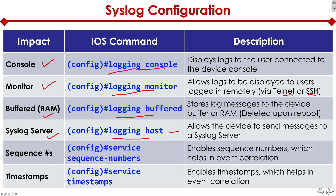Two important supplementary commands that go along with syslog are 'service sequence numbers' and 'service timestamps'. Service sequence numbers add a sequence number next to each event. Service timestamps add a timestamp to each and every log message generated. Combining the two is very powerful — you can see the exact sequence and chain of events on that device, along with timestamps, which is very helpful in event correlation and forensic analysis.